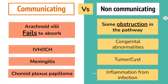Communicating hydrocephalus is a condition that results when the arachnoid villi are unable to adequately reabsorb CSF. In cases of intraventricular hemorrhage or subarachnoid hemorrhage, infectious processes such as meningitis may also render the arachnoid villi non-functional. It may also be due to overproduction of CSF, which is a rare condition usually associated with choroid plexus papilloma or choroid plexus carcinoma.